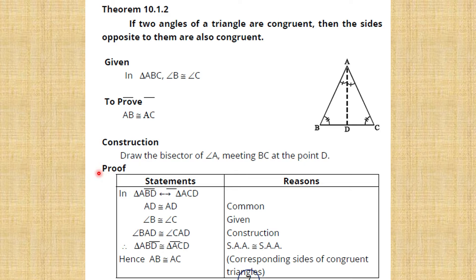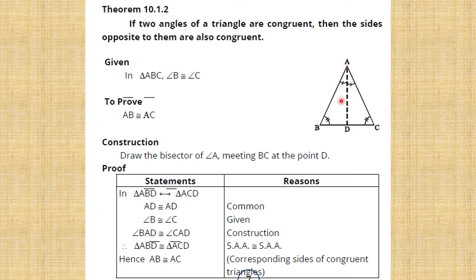Now let's see the proof. In triangle ABD corresponding to triangle ACD, the first statement: AD is congruent to AD. Why? Because AD is common to both triangles, so it is congruent.